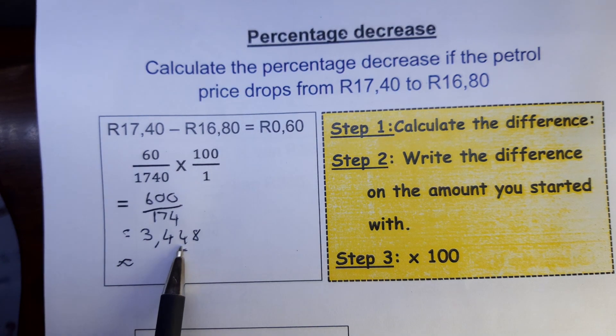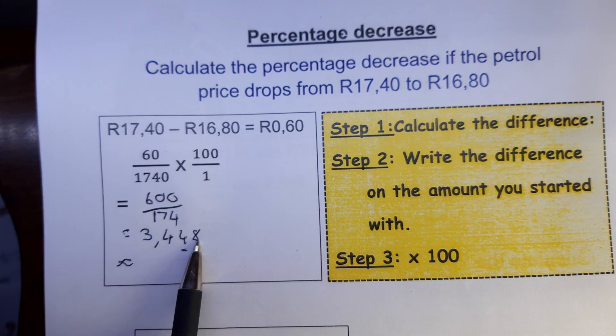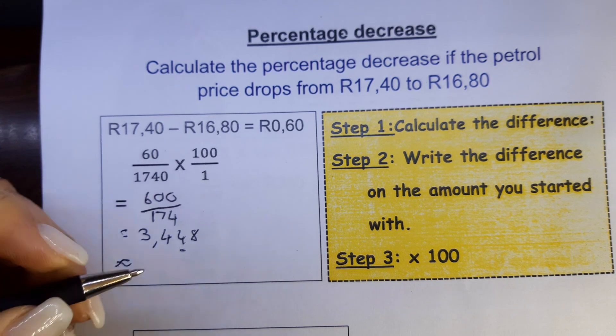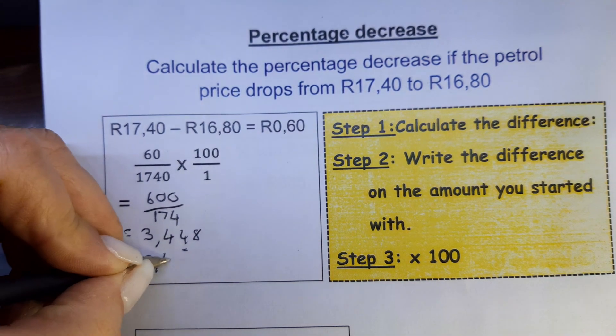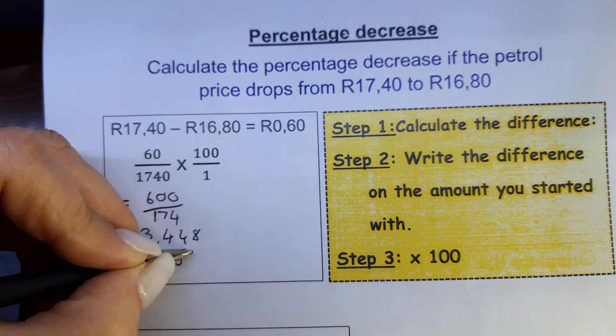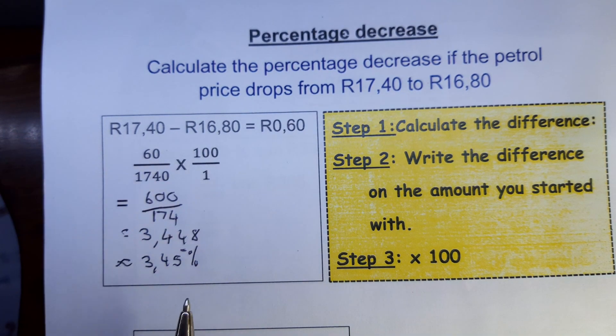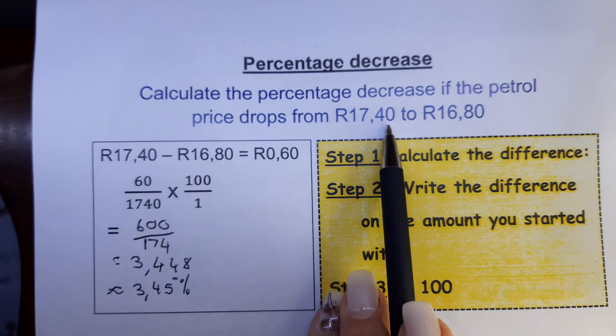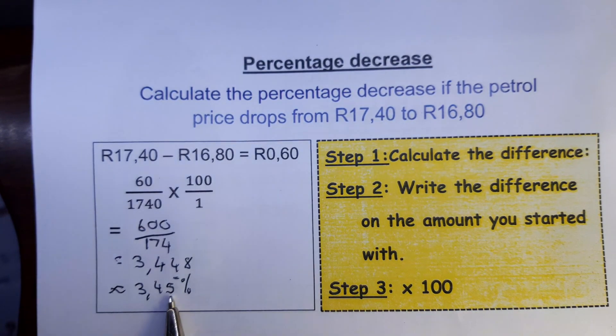But then you round off to 2 decimal places. So knock knock, 2 places, I underlined that one. Who's knocking at my back door? 5 or more, raise the score. So it's 3.45% decrease. So the petrol, we're paying 3.45% less than what we did pay.